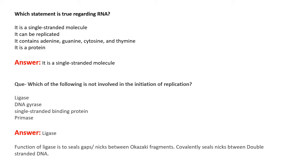The next question asks which of the following is not involved in the initiation of replication: ligase, DNA gyrase, single-stranded binding proteins, or primase. The answer is ligase, which is needed at the end of replication to seal gaps or nicks between Okazaki fragments. DNA gyrase, single-stranded binding proteins, and primase are all required at initiation.